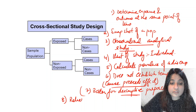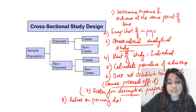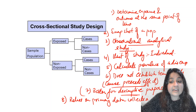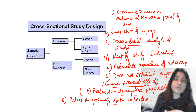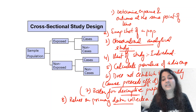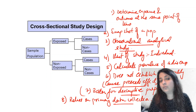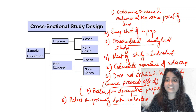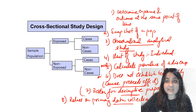Cross-sectional study relies on primary data collection — as a researcher, I have to go and collect the data. Unlike ecological study design, which relied on already collected data, this relies on primary data collection. The golden points for cross-sectional study design: it calculates prevalence and does not establish temporality.